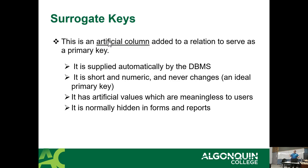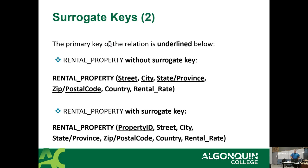Surrogate keys are usually hidden — when you go online and edit your Amazon profile, nowhere on that page does it show you your customer number. It's there and hidden because who cares? Order numbers and receipt numbers are actually some of the rare exceptions where surrogate keys are shown, but even then they're really meaningless to us — we just know it's an order number we'll use to get our money back.